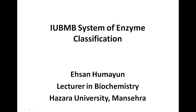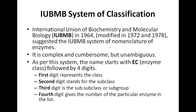Today our topic is the IUBMB System of Enzyme Classification. IUBMB stands for International Union of Biochemistry and Molecular Biology. We had a brief introduction yesterday, and today we are going to study it further. IUBMB was basically an organization that was established in 1964.